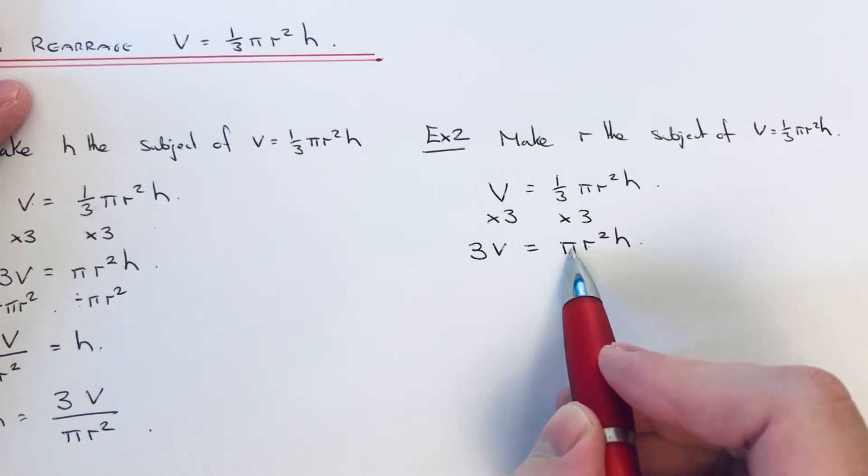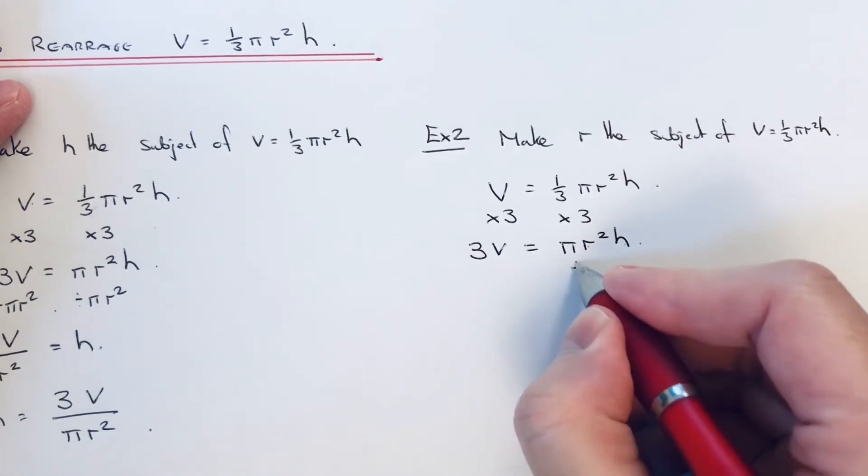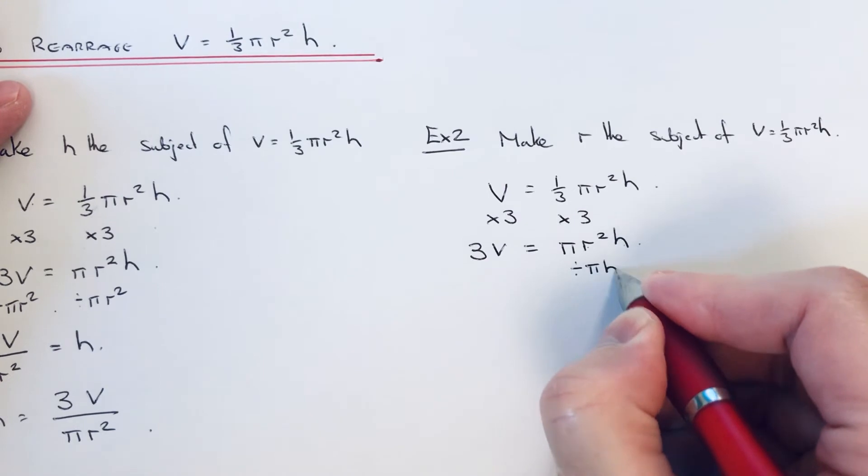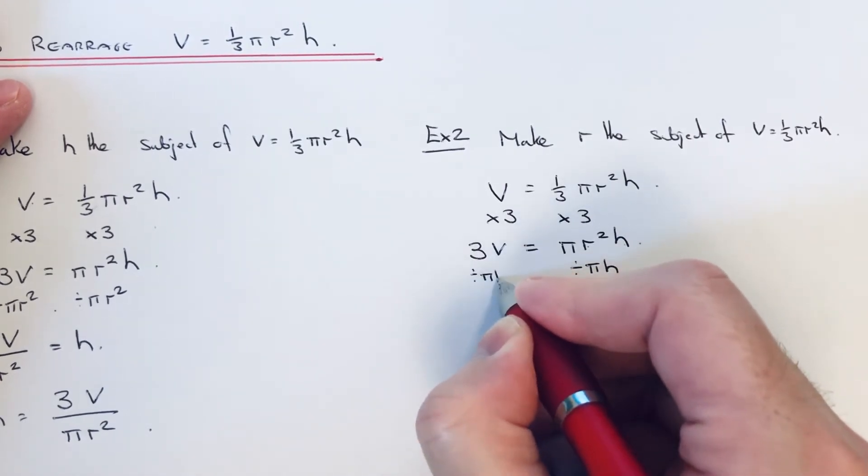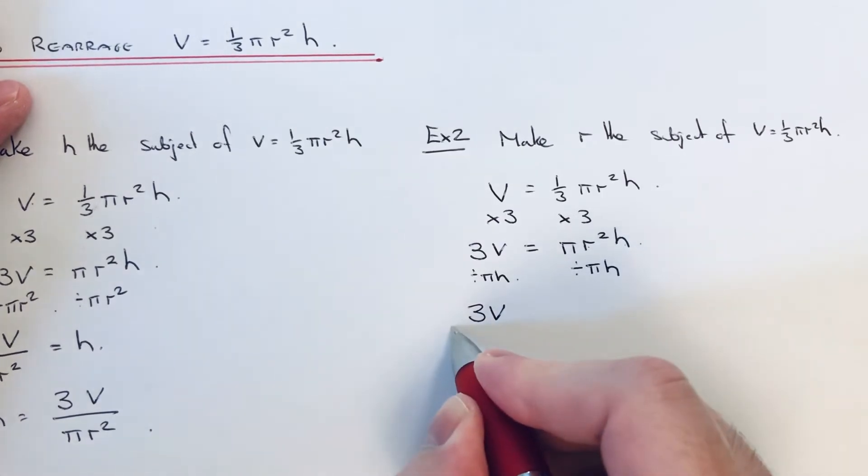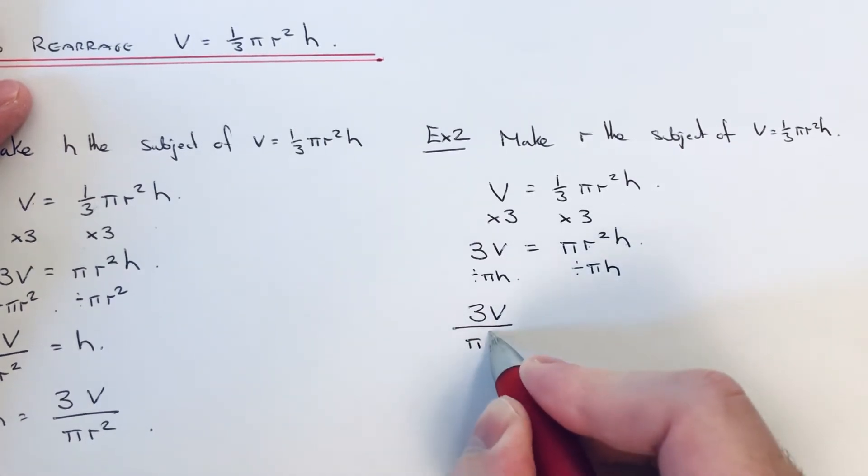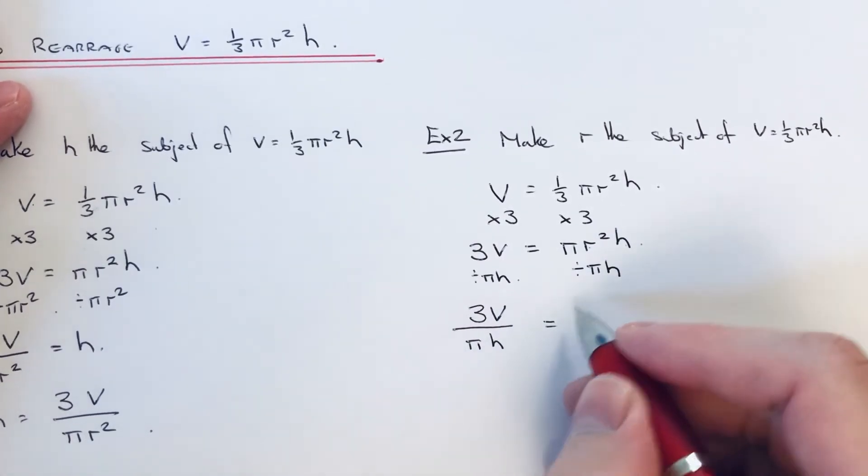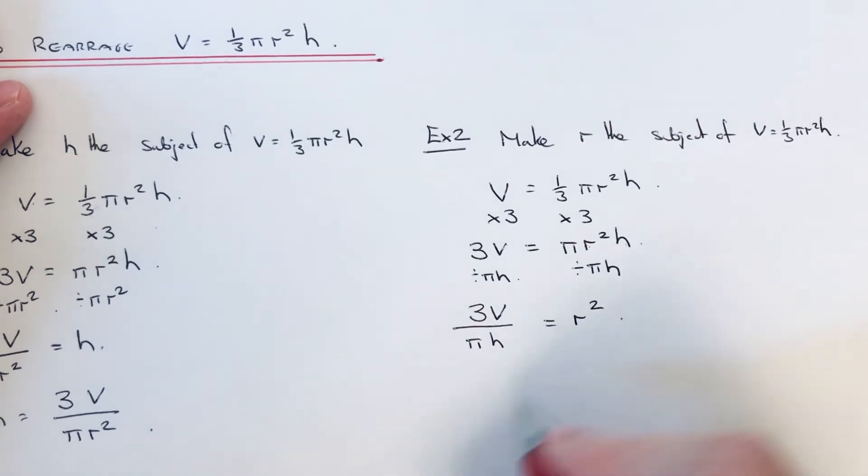We've got to divide by πh on both sides. On the left-hand side, this can be written as 3V over πh, and that's equal to r².